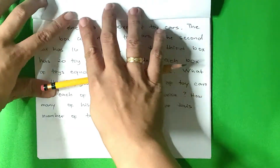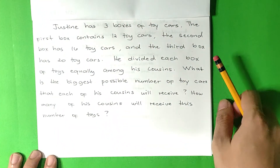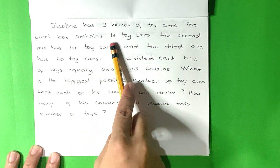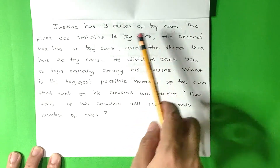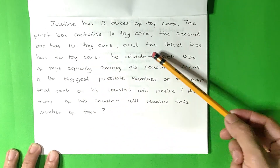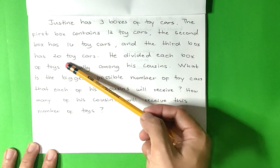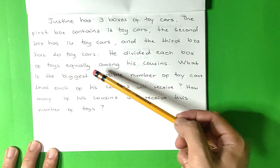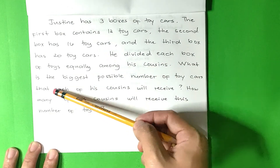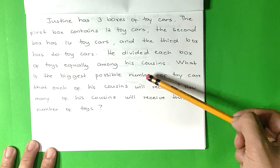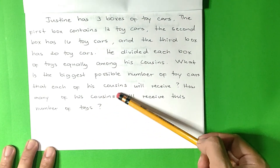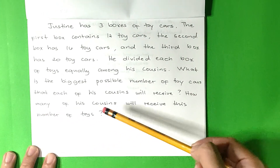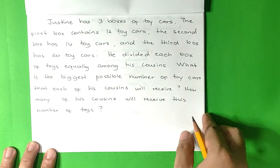Let us have an example. Justin has three boxes of toy cars. The first box contains 12 toy cars, the second box has 16 toy cars, and the third box has 20 toy cars. He divided each box of toys equally among his cousins. What is the biggest possible number of toy cars that each of his cousins will receive? How many of his cousins will receive this number of toys?